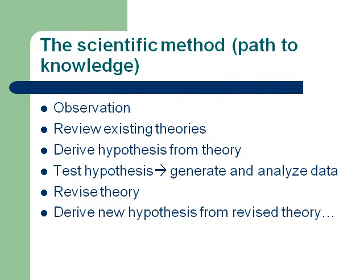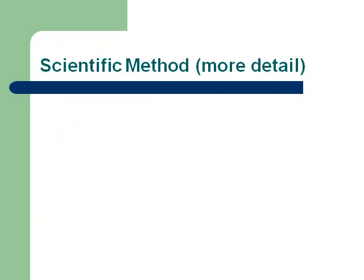You don't just say, okay, that's what happened in the last study, therefore the theory is right — it happened once but may have been a fluke. So you derive a new hypothesis from the revised theory and test it again. In this way we can build scientific knowledge. Now let's talk in more detail about the scientific method. You start with some observation — you notice something in the world and begin to wonder if it might be true in more than the instance you noticed it.